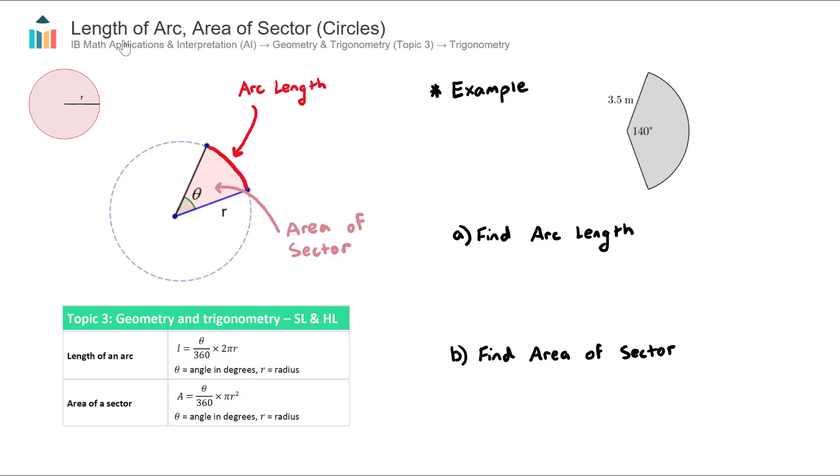In this video we look at how to find the length of an arc and the area of a sector in a circle. These are important concepts in the AI course found in topic three geometry and trigonometry under the subtopic of trigonometry.